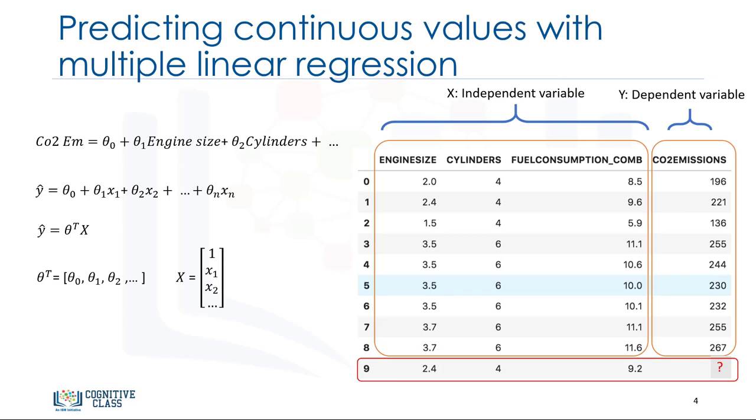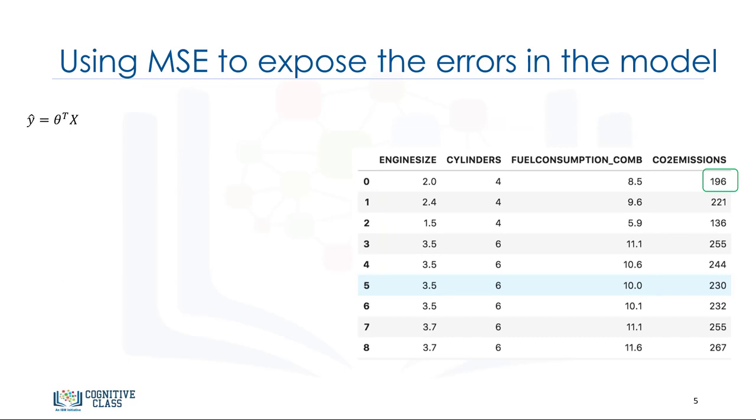To this end, and as is the case in linear regression, we should estimate the values for theta vector that best predict the value of the target field in each row. To achieve this goal, we have to minimize the error of the prediction. Now, the question is, how do we find the optimized parameters? To find the optimized parameters for our model, we should first understand what the optimized parameters are. In short, optimized parameters are the ones which lead to a model with the fewest errors.